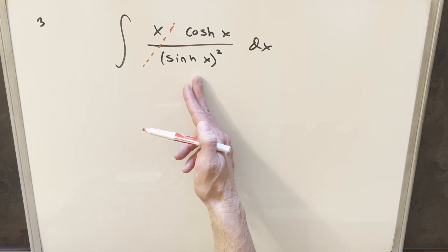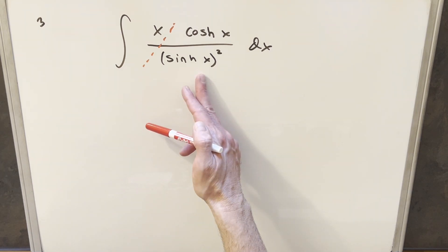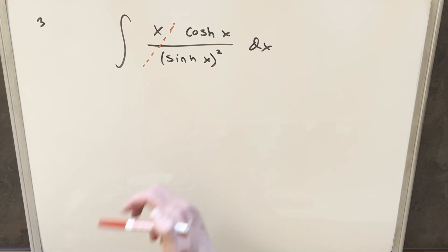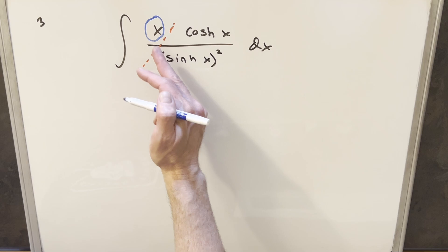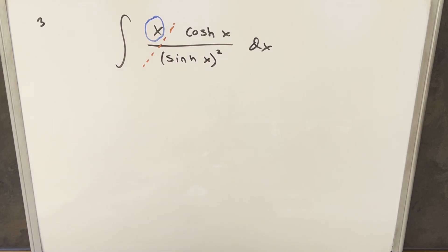This is just kind of a formula. You could rewrite this as hyperbolic cotangent times hyperbolic cosecant. We have a formula for that. But the trouble is we've got this x hanging out here and the x doesn't really work very well with this other stuff. So what I'm going to need for this is integration by parts.